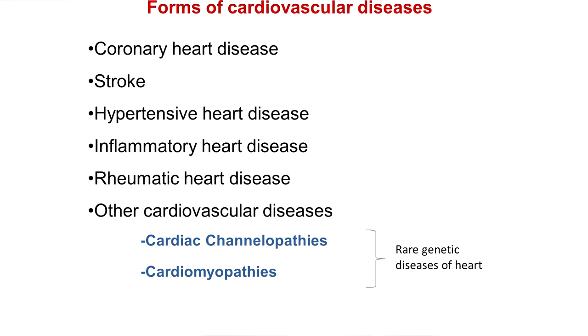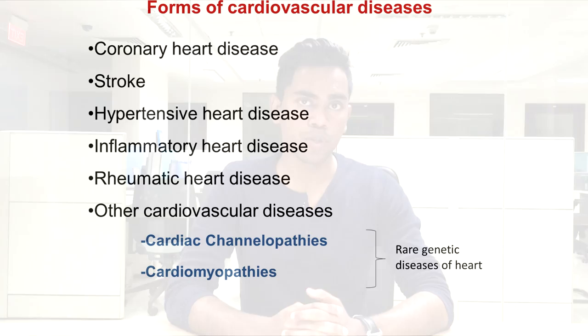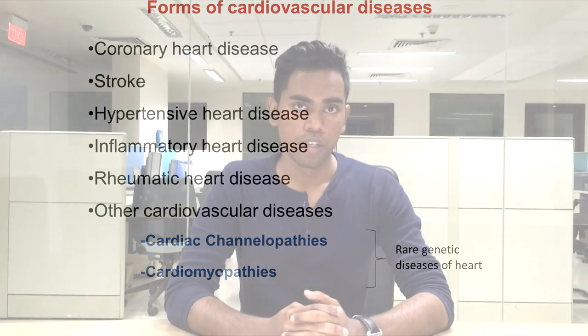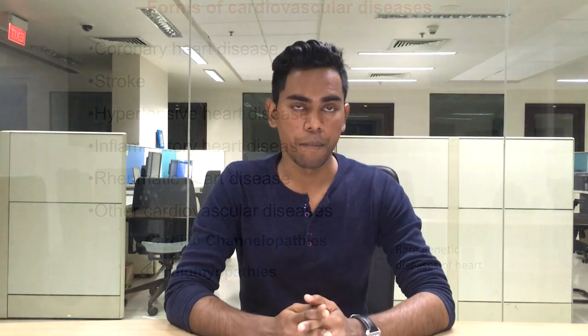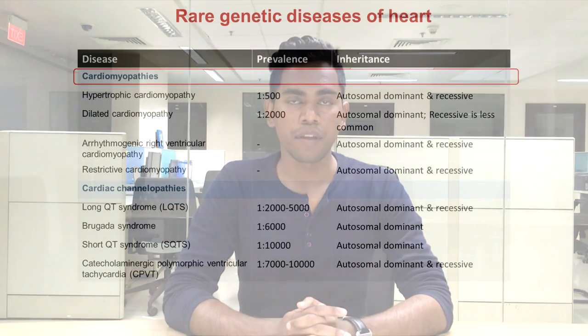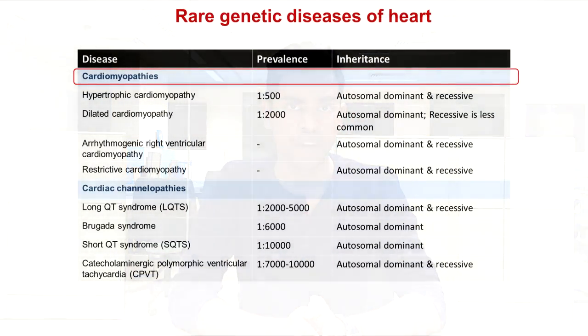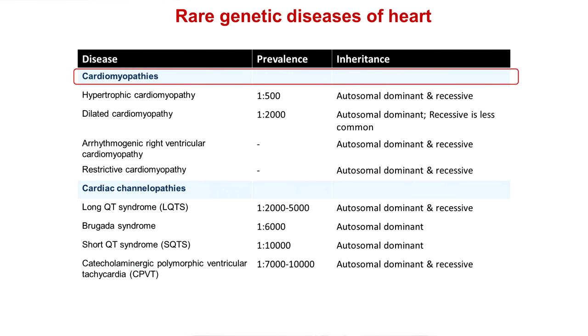For the current discussion, I would be more focused on two particular types of congenital heart disorders — cardiac channelopathies and cardiomyopathies. As my topic is based on rare genetic disorders of the heart, I will be describing majorly about those. There are two main types: cardiomyopathies and channelopathies. These are diseases classified on the basis of their prevalence and pattern of inheritance.